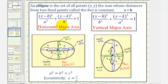The standard equation of an ellipse is given here, where a is always greater than b. Notice that if the larger denominator is under the x part of the equation, we have a horizontal major axis. And if a squared, the larger denominator, is under the y part of the equation, we have a vertical major axis. The center of the ellipse would have coordinates h comma k.